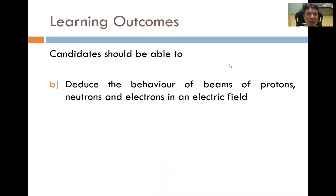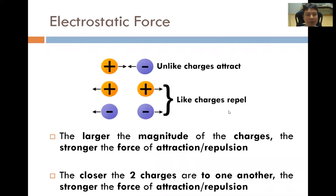Learning outcome B states that candidates should be able to deduce the behaviour of beams of protons, neutrons and electrons in an electric field. In order to understand this learning outcome, we first have to talk about the electrostatic force. The electrostatic force is simply the same as magnets — unlike poles attract, and for charges it's no different.